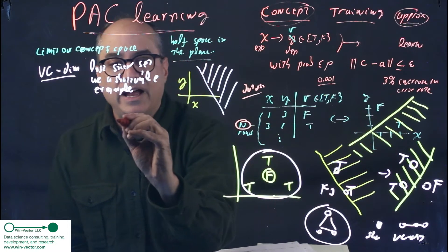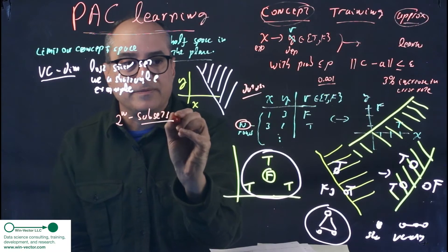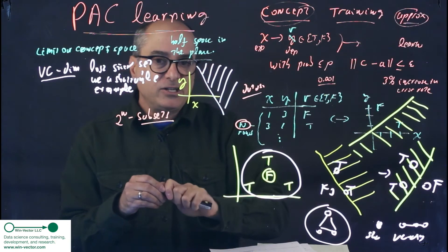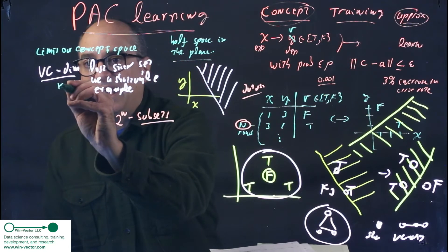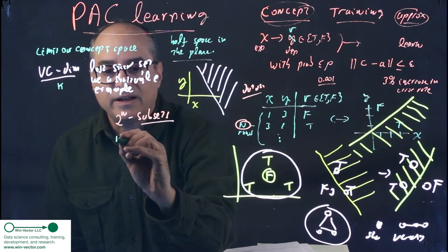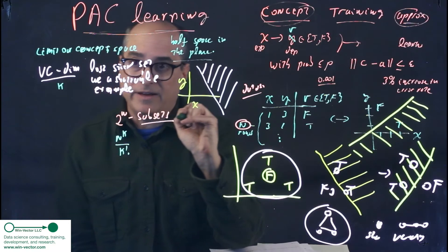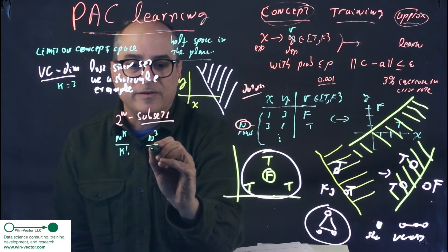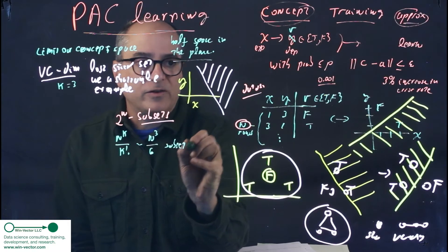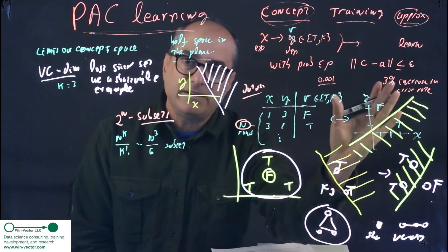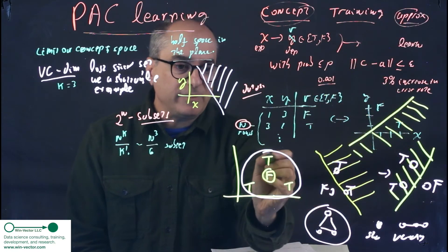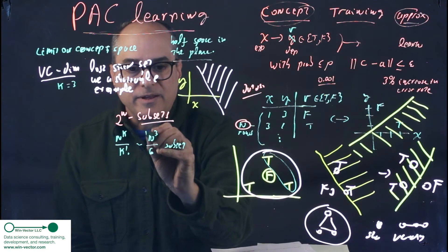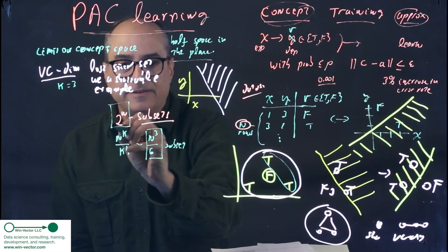If we list every possible subset that this can be split into, we get a list of all the subsets we can access by this concept space. Now, a system of n rows has two to the n subsets. The Sauer-Shelah lemma says that actually, if your VC dimension is bounded by K, then you can only get to about n to the K over K factorial subsets. Now, in our case, K equals three, so we can only get to n to the third over six subsets. So, certain subsets of our data set cannot be identified by our concept.